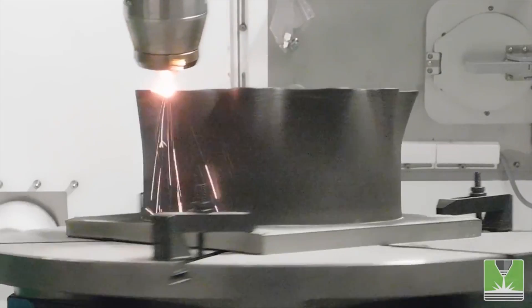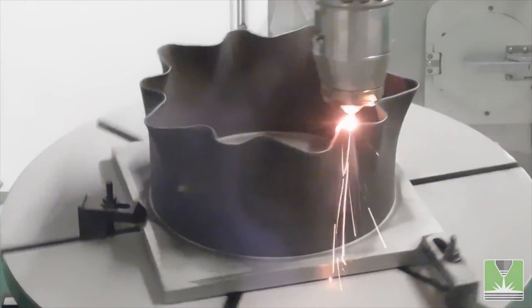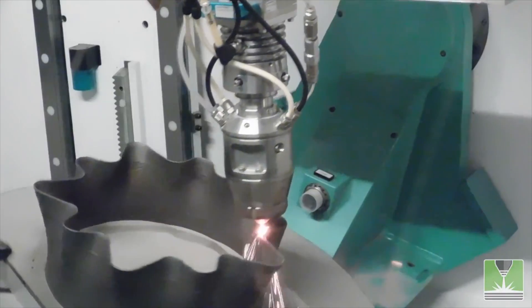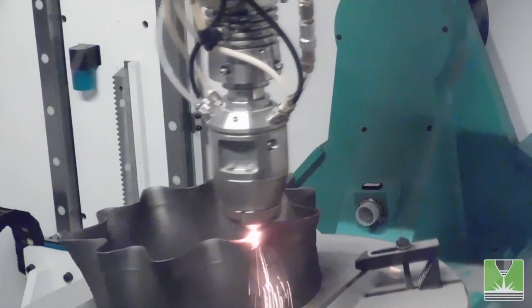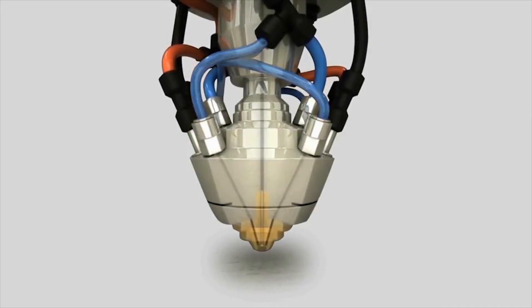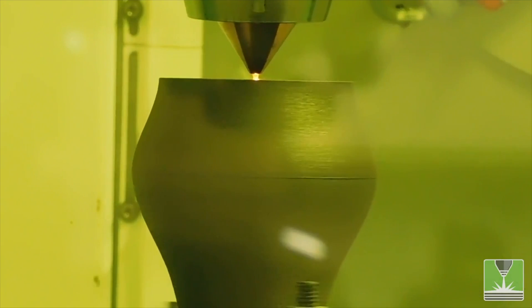For number two, directed energy deposition or DED. This technology is comparable to filament extrusion. The metal material is pushed through a special nozzle, like with an FDM printer, but a powerful laser beam melts and solidifies the material at its deposition point.